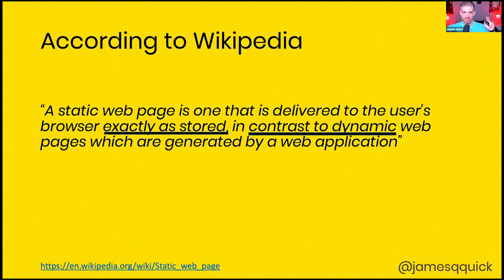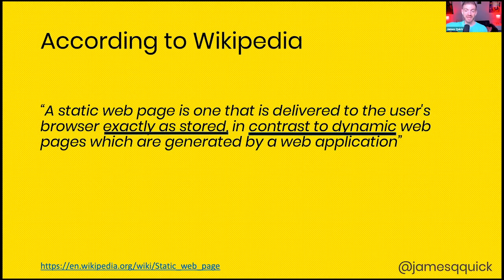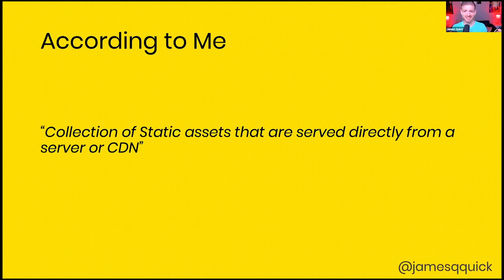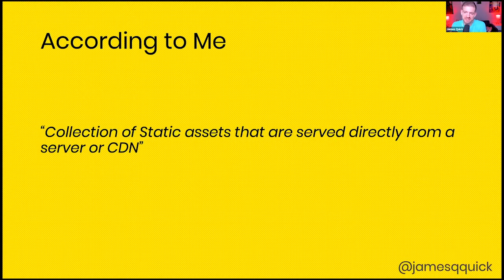In contrast, dynamic web pages — more traditionally server-side rendered pages — involve some calculation on the server. If you ask for a page, it might go to a database to get information, render an HTML page based on that, and send it back. According to my definition, a static site is a collection of assets served directly from a server or CDN — a Content Delivery Network. You have HTML, CSS, and JavaScript files that get sent directly back to a user with no real-time calculation.